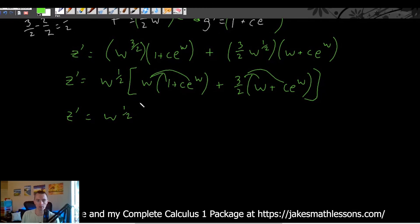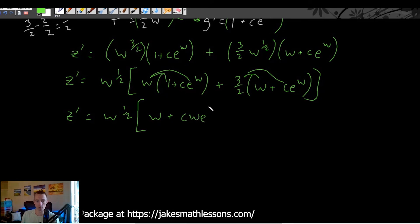So w to the one half, distribute our w in there, plus cw e to the w, plus distribute our three halves. So we get three halves w plus three halves c e to the w.